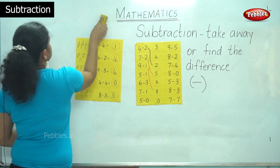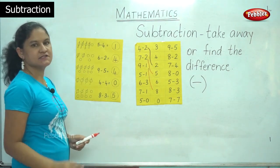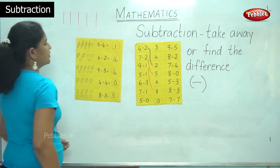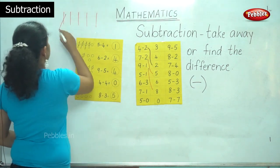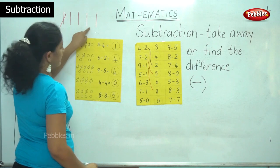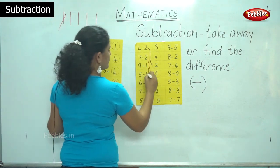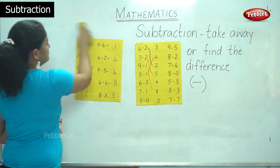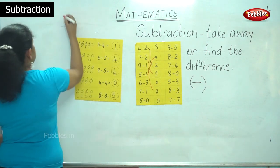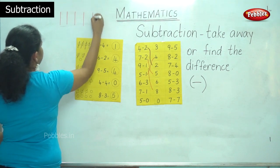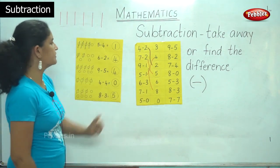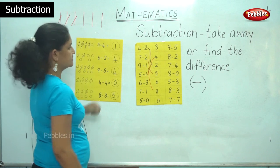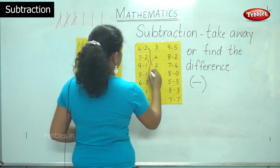The next sum I have 5 minus 1. So I will take away 1, and I get the answer: 1, 2, 3, 4. So I get 4. So I match it up with number 4. The next sum I have 6 minus 3, or 6 take away 3. So 1, 2, 3, 4, 5, 6, and I am taking away 3 sticks: 1, 2, 3. So my answer is 1, 2, 3 — the answer is 3. So I match it up with number 3.